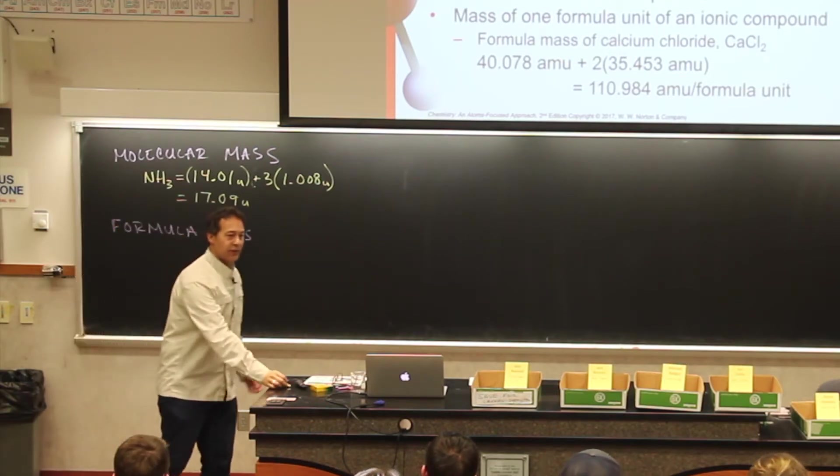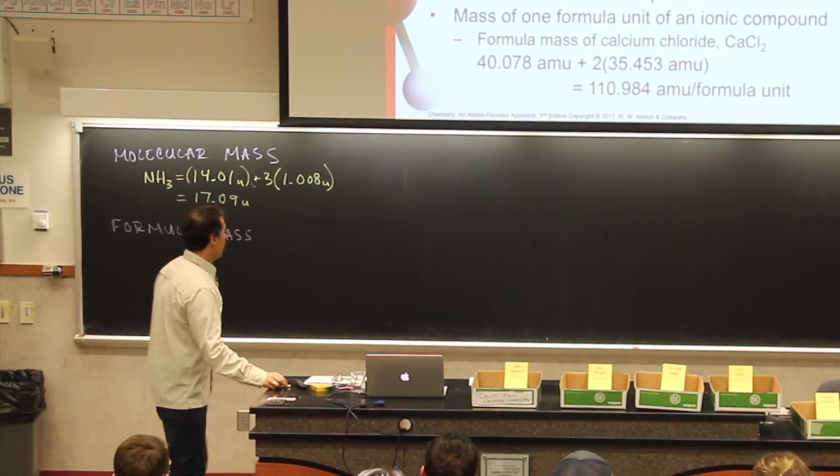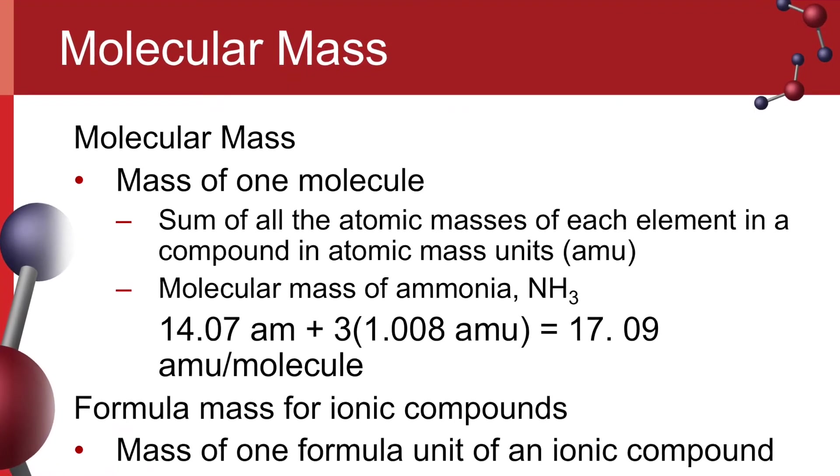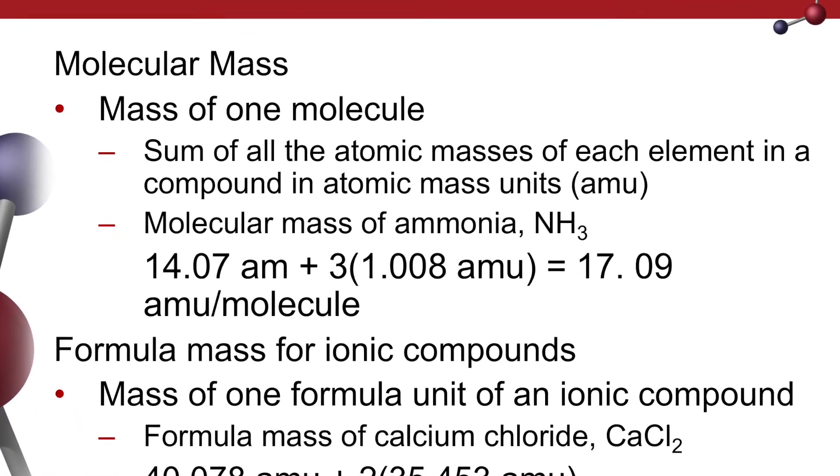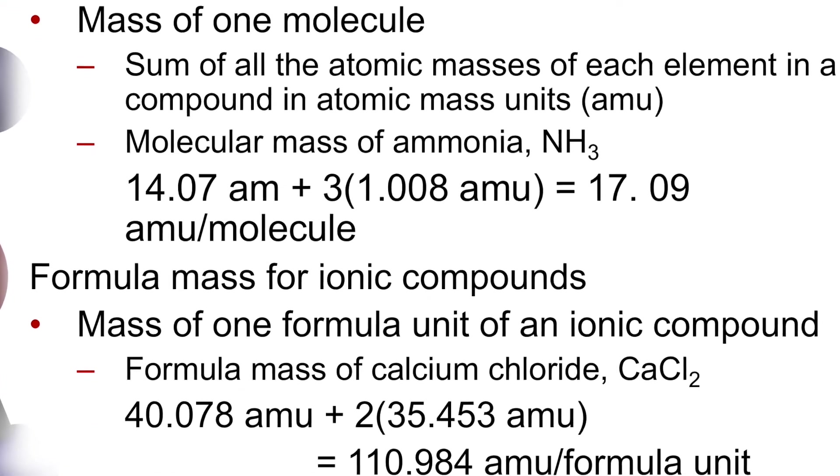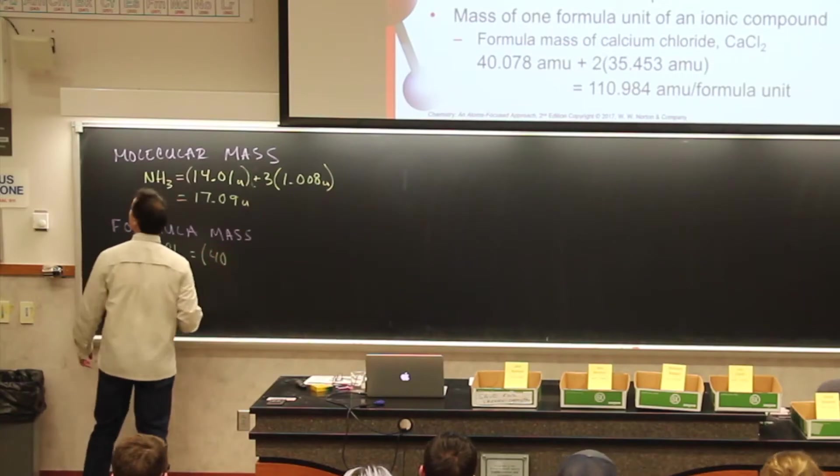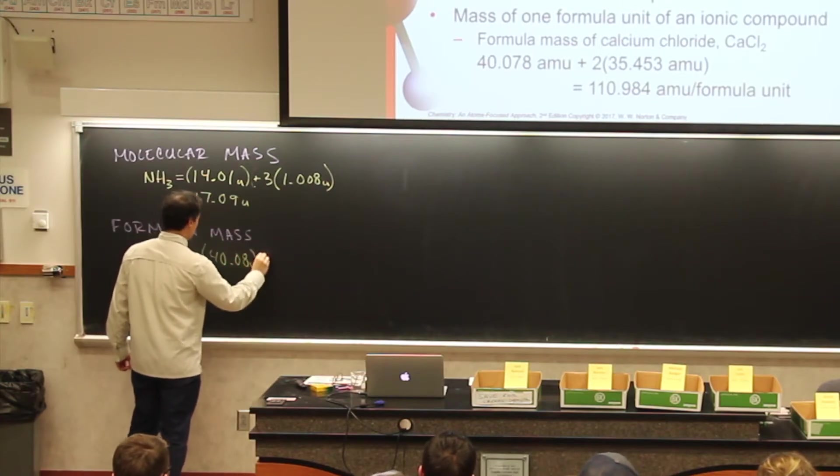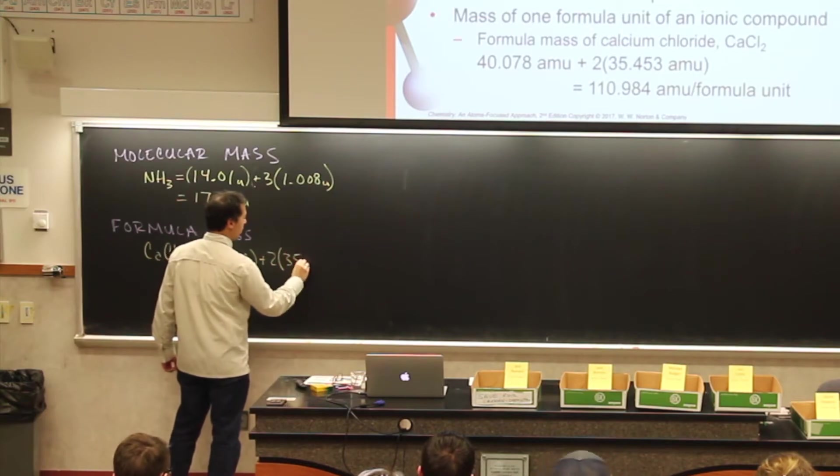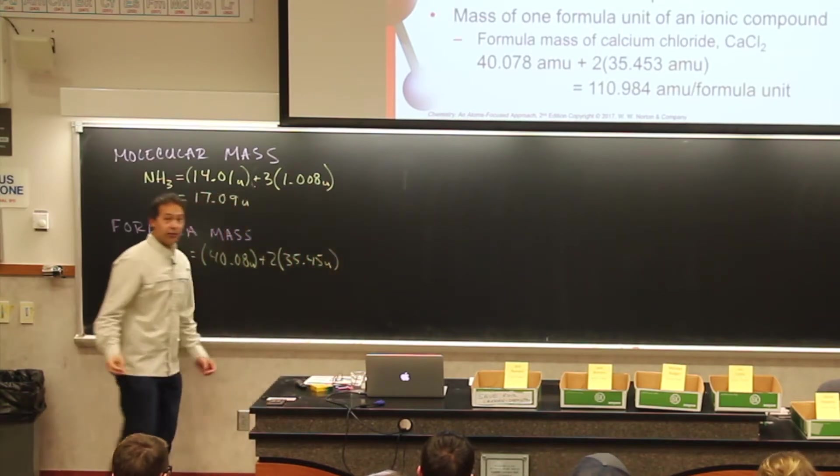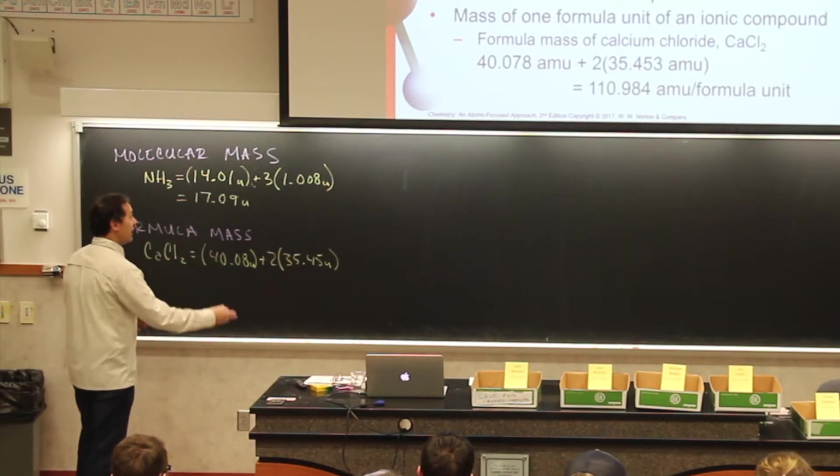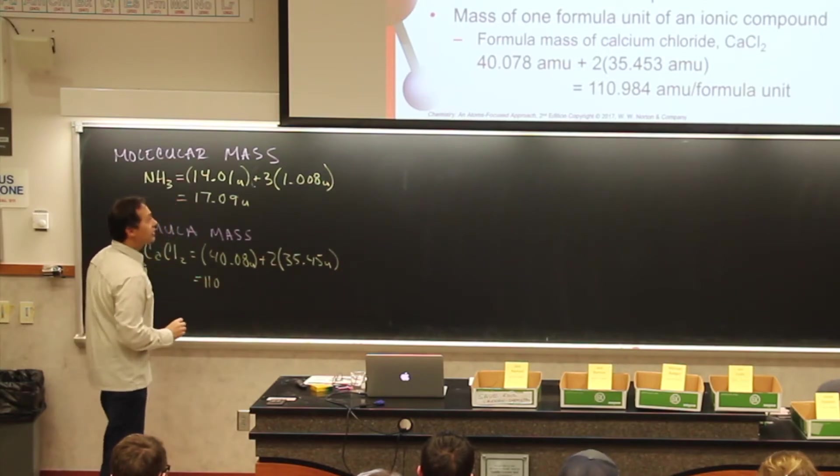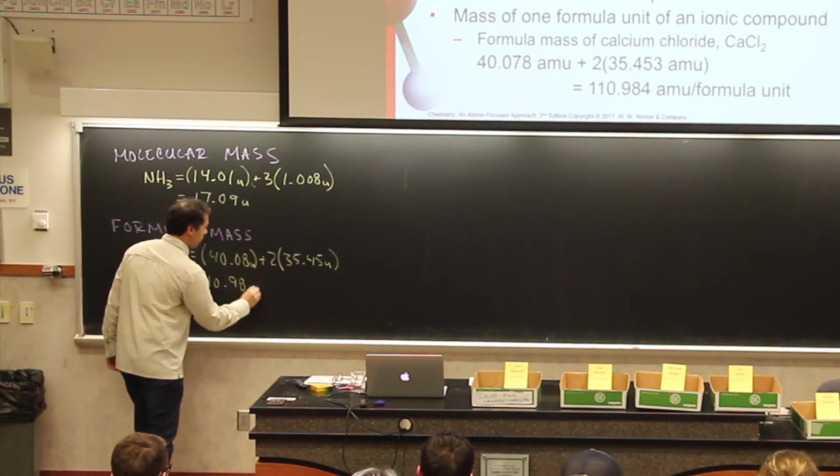And then we take a look at formula mass. An example would be calcium chloride, CaCl2. We would add a calcium, which is 40.08 units, and then we would add two chlorines to that, which is 35.45 units. If we add those all together, we get something like about 110.98-ish units.